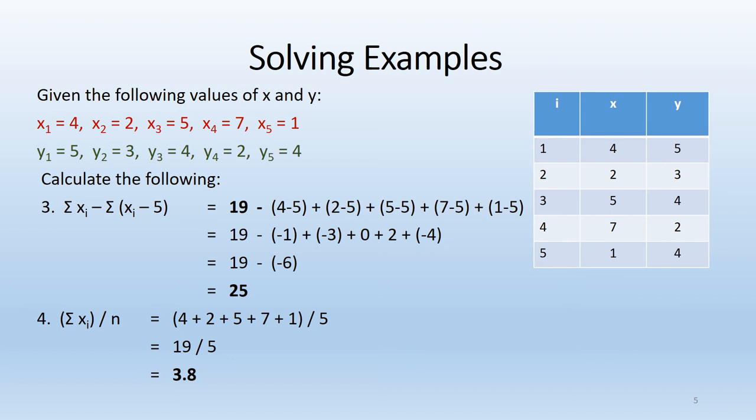And number four, we're introducing another one of our symbols, that n. Remember, n is the sample size, and that is the number of cases in your data set, which was five. The top part of that equation is encapsulated in parentheses. It's telling us to make sure you get that answer first, the sum of all the x's, before you divide by the sample size. We should end up with 3.8.